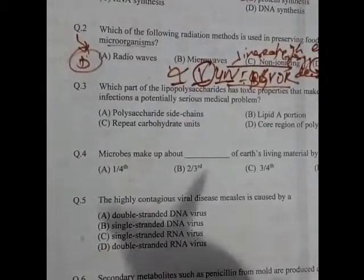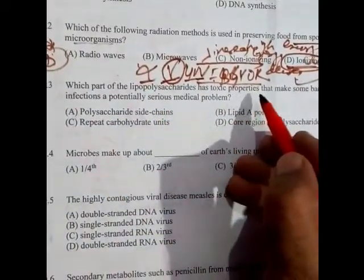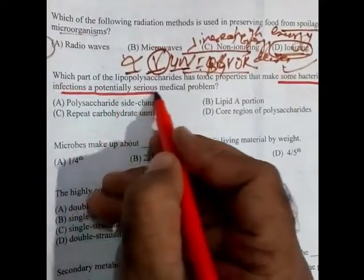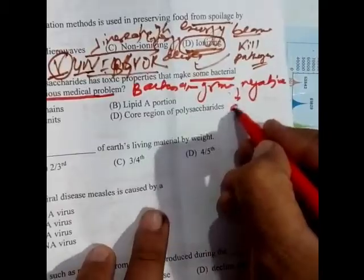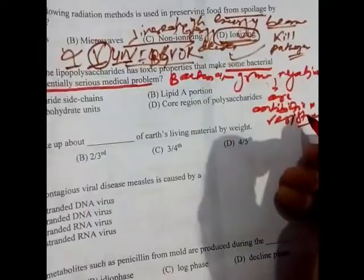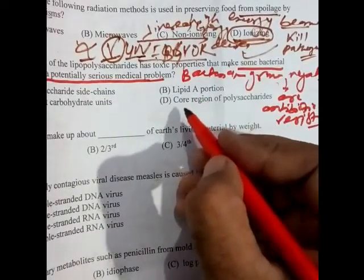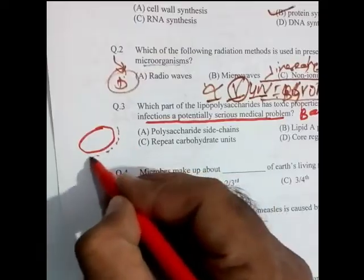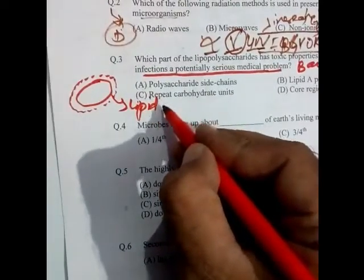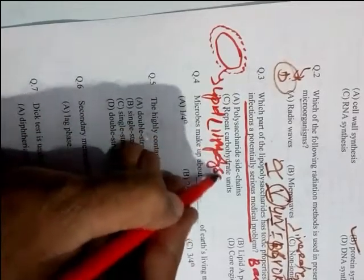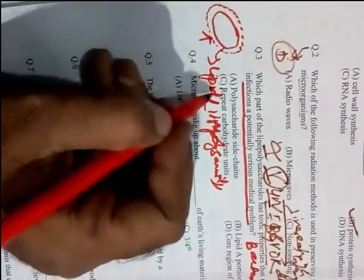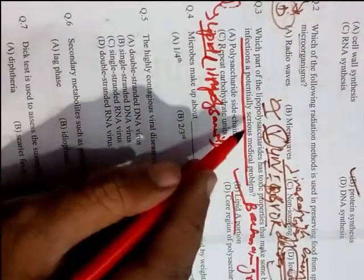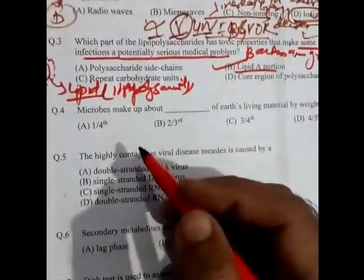Question 3: Which part of the lipopolysaccharide has toxic properties making some bacterial infections serious? Gram-negative bacteria are antibiotic-resistant and cause many medical problems. Outside their cell wall they have a thick lipid covering called lipopolysaccharide (LPS), which prevents antibiotics from penetrating. Because of this, Lipid A is the component responsible for causing serious medical problems.